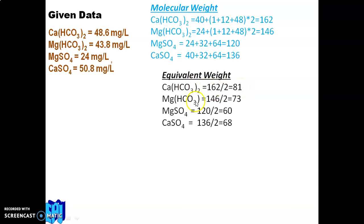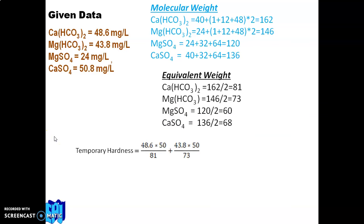For MgSO₄: molecular weight = 24 + 32 + 64 = 120. It ionizes to Mg²⁺ and SO₄²⁻, both with charge 2, so equivalent weight = 120 ÷ 2 = 60. For CaSO₄: molecular weight = 40 + 32 + 64 = 136; it ionizes to Ca²⁺ and SO₄²⁻, so equivalent weight = 136 ÷ 2 = 68.